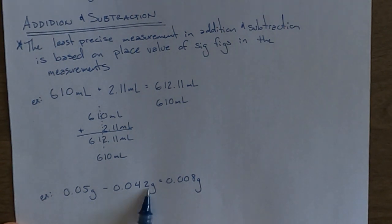This measurement goes to the thousandths place. And so the one that's least precise is this one. And that means that based on place value, our answer has to be rounded to the hundredths place. And so that means taking this but rounding it to this place value would mean that it's 0.01 grams.